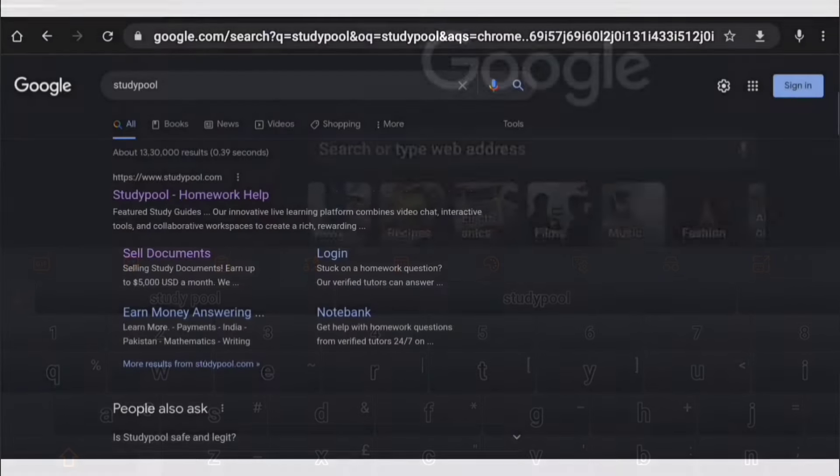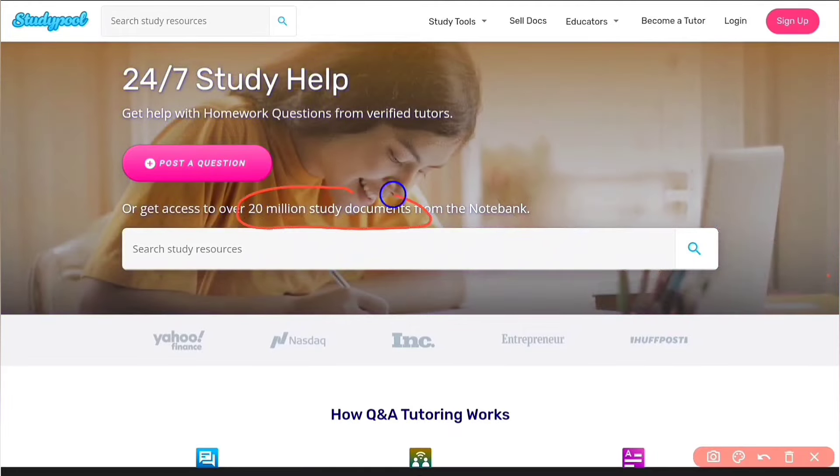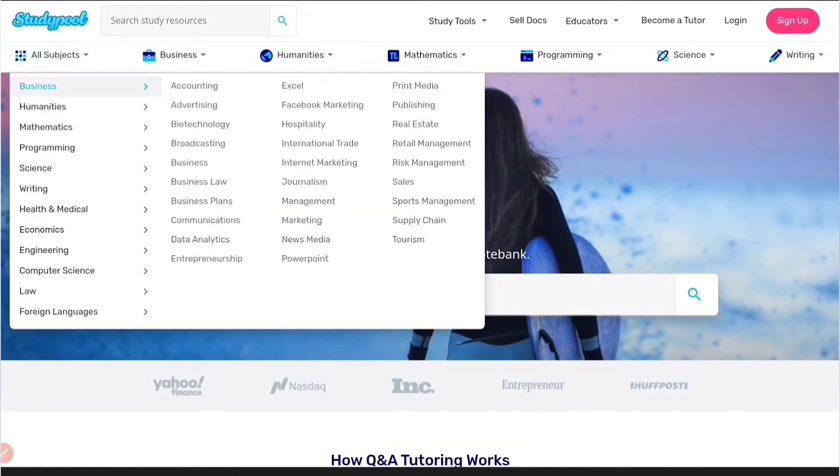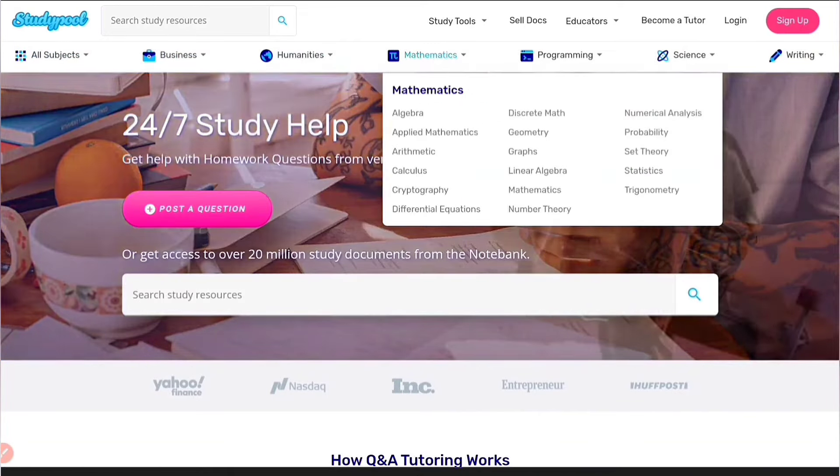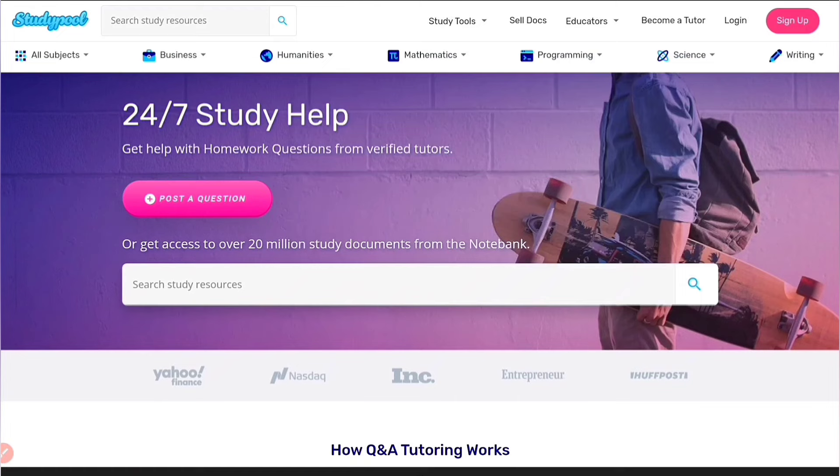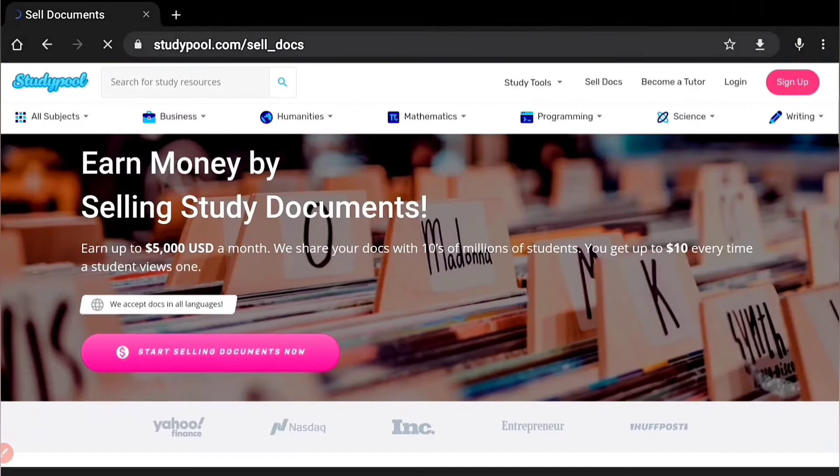Search Study Pool on Google and you'll find the website. It has over 20 million study documents in its Notebank. You'll find all subjects and topics—business, humanities, mathematics, programming, science, etc. To sell documents, just click on the 'Sell Docs' icon.